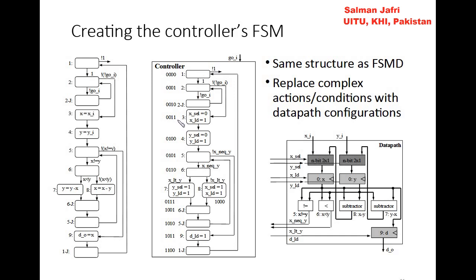In state 3, we assign the value of x_i to x. We translate this into control signals: x_select should be 0 to select x_i, and x_load should be 1 to load the value. This single statement is translated into two control signals in state 3 (0011). Similarly, in state 0100, y must be assigned y_i, so y_select is set to 0 and y_load is set to 1 to load y_i into variable y.